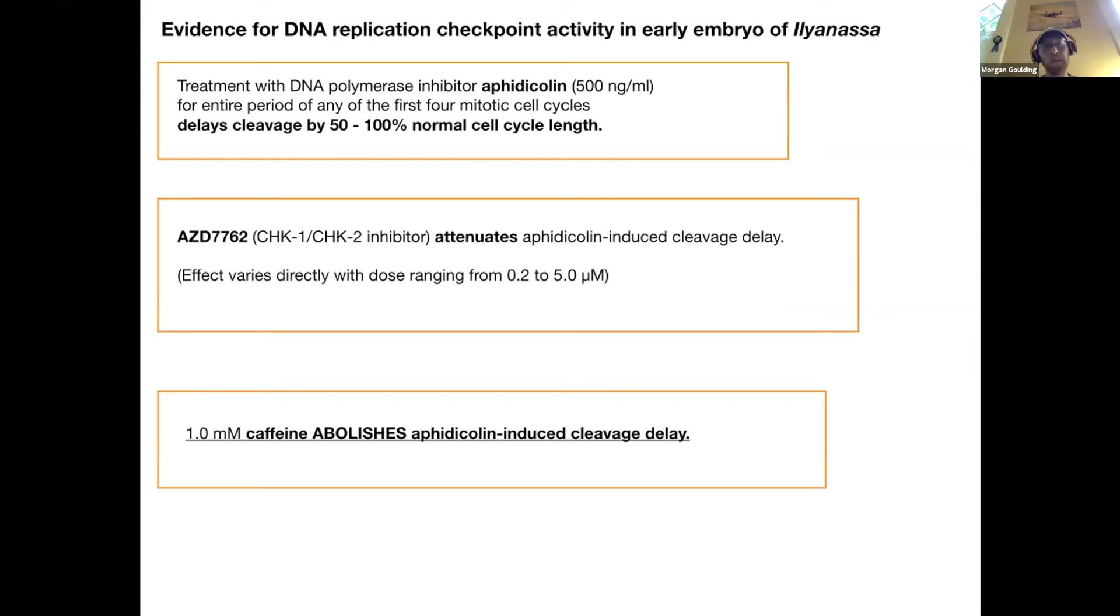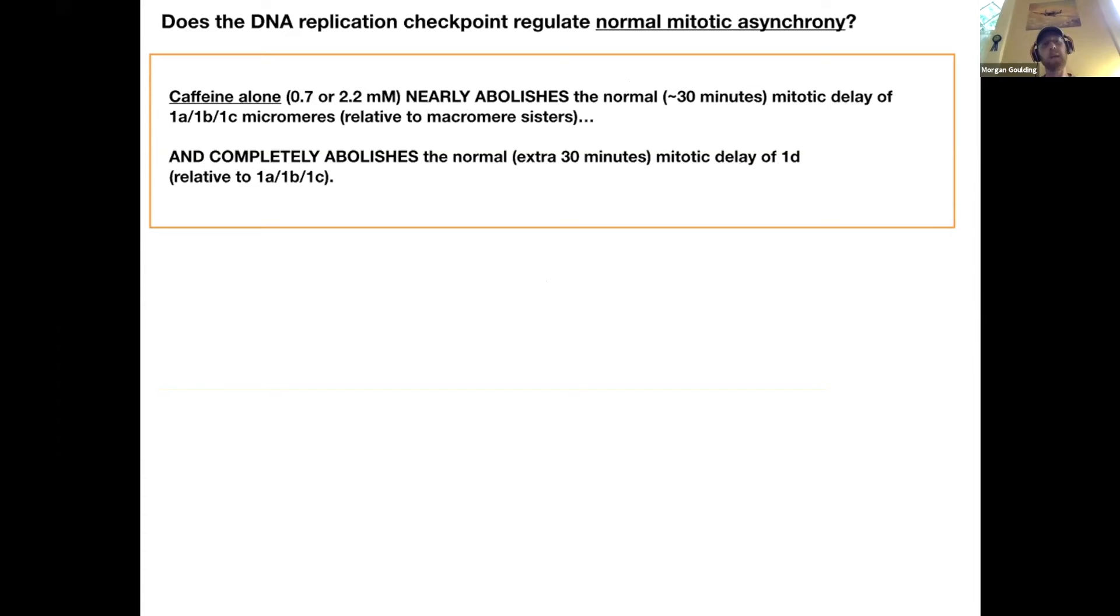There is a DNA replication checkpoint in these embryos. If you hit them with aphidicolin, a DNA polymerase inhibitor, they don't divide. So that's interesting. Is it the classical conserved DNA replication checkpoint? I think it is because an inhibitor of check one and check two kinases attenuates this block in a dose dependent way. And then caffeine, which was known to bypass this block back when I was a kid, it totally abolishes the delay. So I think it's that pathway.